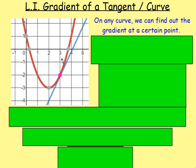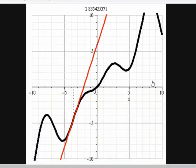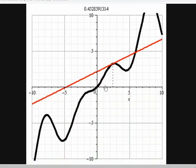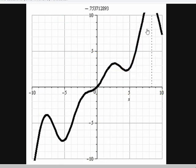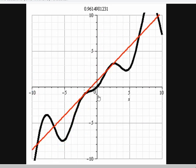Let's imagine we have a curve. Looking at this diagram here you can see in red we have the curve drawn in. On any curve we can find out the gradient at a certain point. As you move along that curve, there are times it's going to be steeper than other times. This blue line drawn in is a tangent to the curve — a line that touches the curve and no more. As it moves along the curve the line changes its steepness; it changes its gradient.